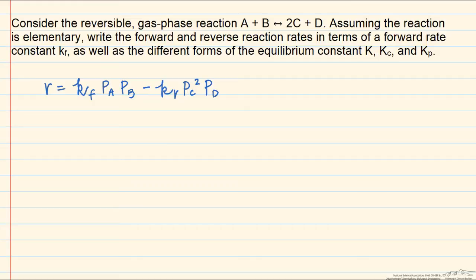We can write the overall rate of reaction R equal to a forward rate constant times either the partial pressure or concentration. Here I chose to start in terms of partial pressure, so we have a rate constant times the partial pressure of A to the first power, times the partial pressure of B to the first power, minus a reverse rate constant times PC squared — since there are 2 moles of C — times the partial pressure of D to the first power.